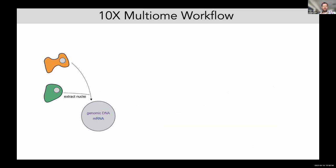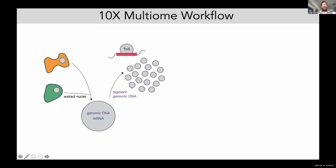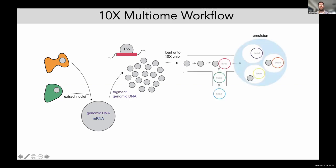The 10x multi-omics kit achieves that by first tagmenting the genomic DNA present within your isolated nuclei fraction. An enzyme called TN5 introduces adapters into accessible regions that will later be PCR amplified. Once you've tagmented your nuclei, you then load it onto the 10x chip — a microfluidics chip where nuclei are pressed through a capillary, married with a bead that contains a unique oligo set. Within the emulsion, each bead and nucleus results in an ATAC and RNA-seq library prep.